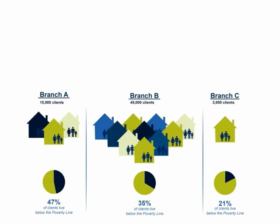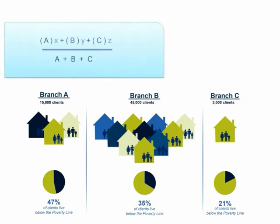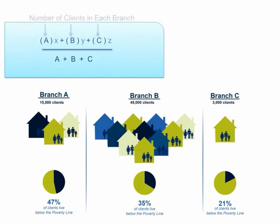Let's take this one step further and discuss how to find the rate of poverty in your group when you have poverty rates for a number of subgroups. This is common among organizations that have different branch offices. Each branch office reports the poverty rate to the organization's leadership, which in turn must determine the poverty rate among all clients. To do this, you must use a weighted average to account for the different numbers of clients at each branch. The formula looks like this: multiply each branch's poverty rate by the number of clients surveyed at that branch, find that number for each branch and add those numbers together, then divide by the total number of clients surveyed at all branches.